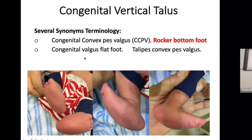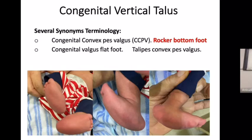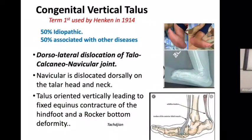Congenital vertical talus has several synonymous terminologies. The most common is 'rocker bottom foot,' which discriminates it from the flat foot more common in younger age groups. Other terminology used includes congenital convex pes valgus talipes and convex pes valgus. Fifty percent of congenital vertical talus cases are idiopathic, and 50% are associated with other diseases such as neurogenic disorders or arthrogryposis congenita.